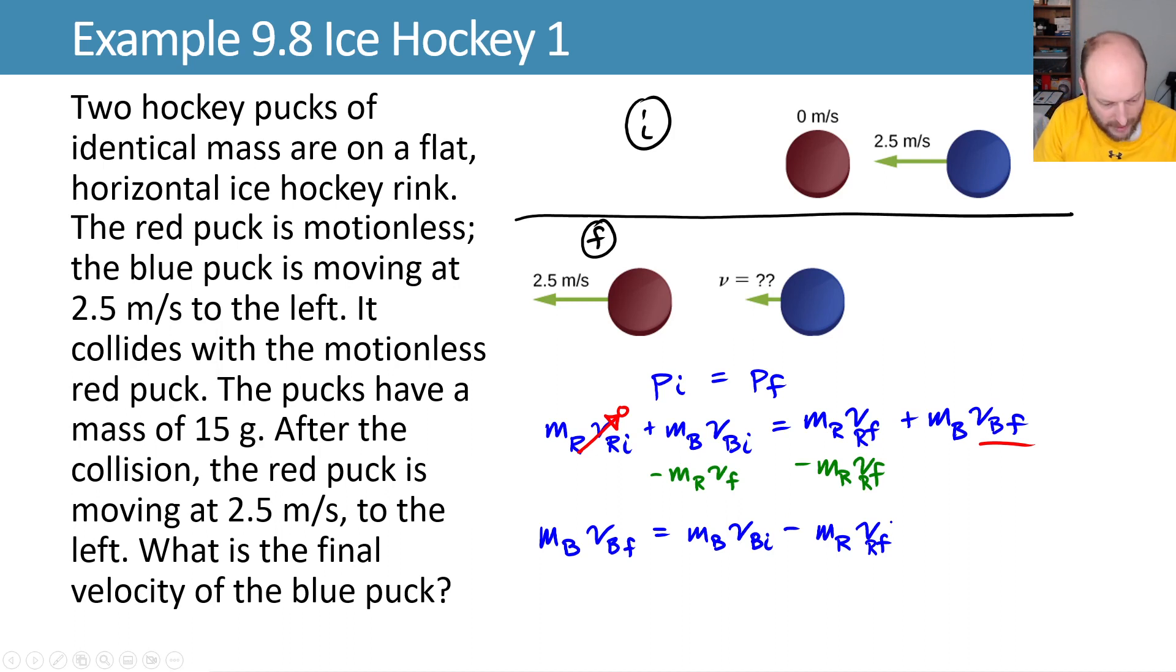We'll now divide both sides by MB to cancel it out there, and we're left with our velocity of our blue puck finally equaling this nonsense. You can plug in our values and what you should find is that we end up with zero final velocity.